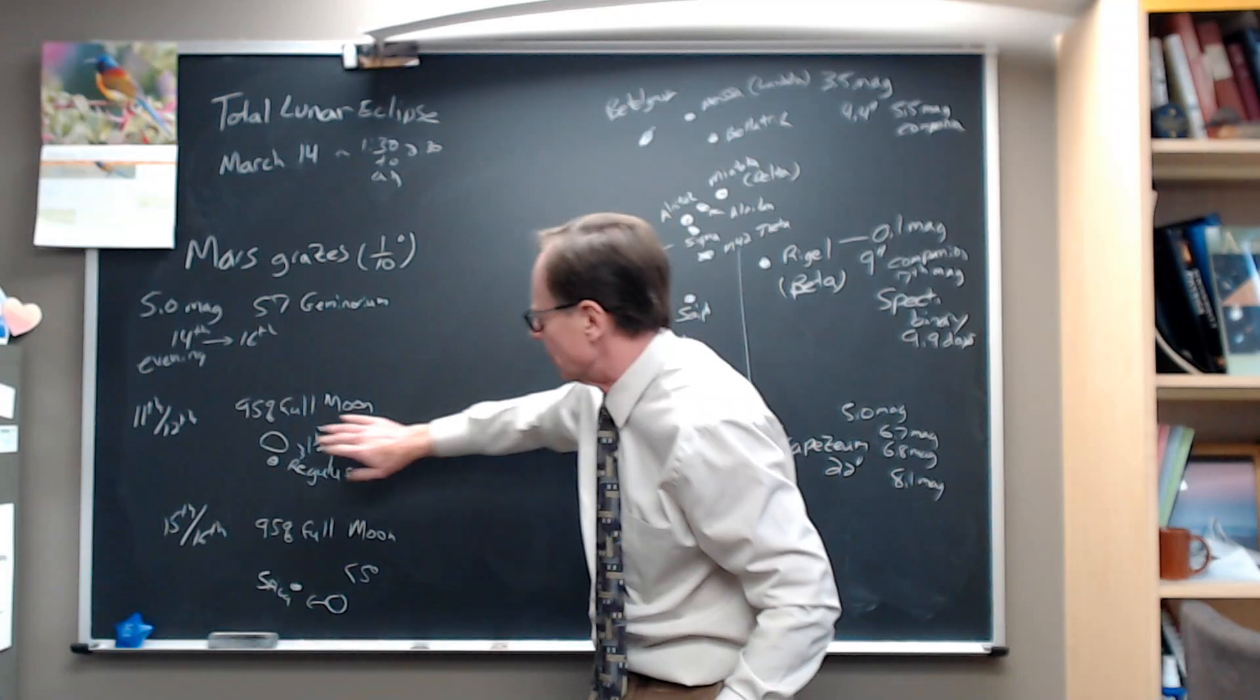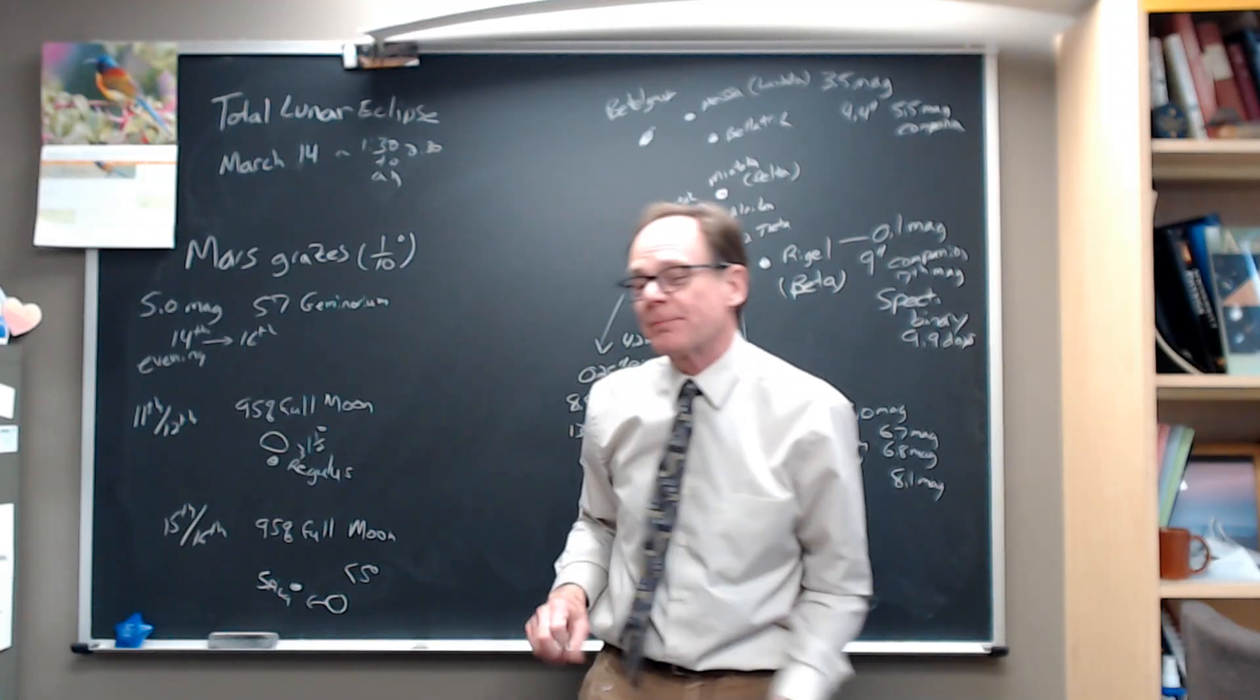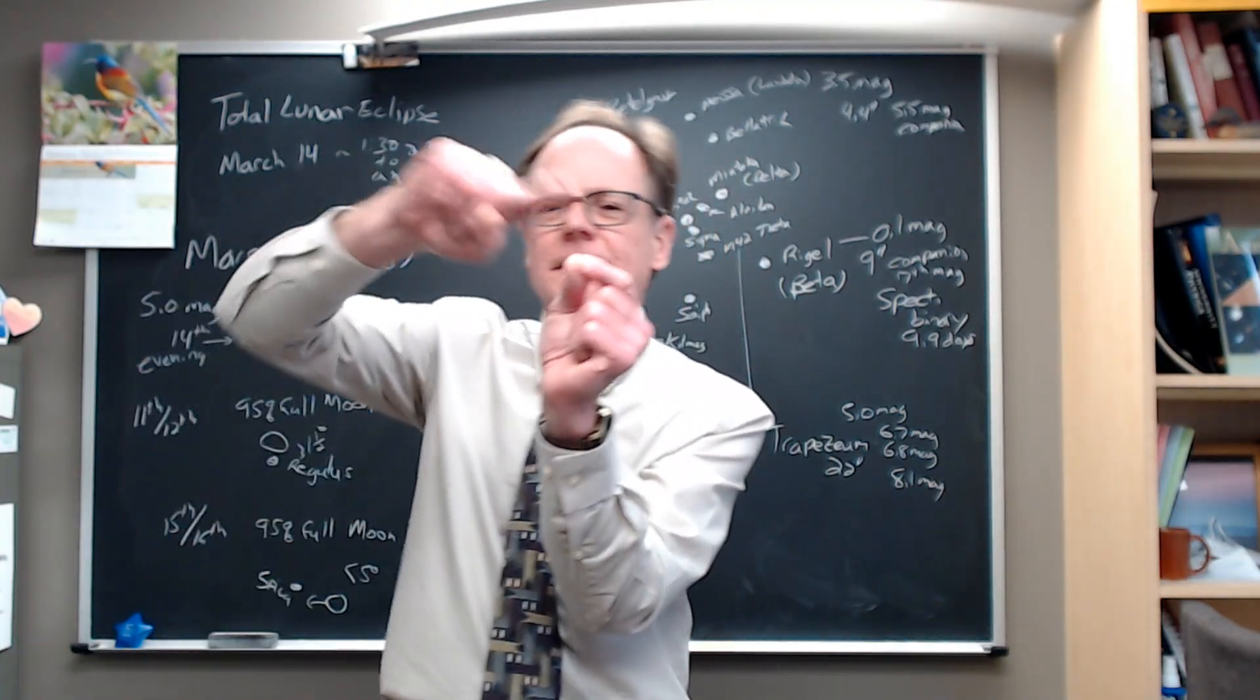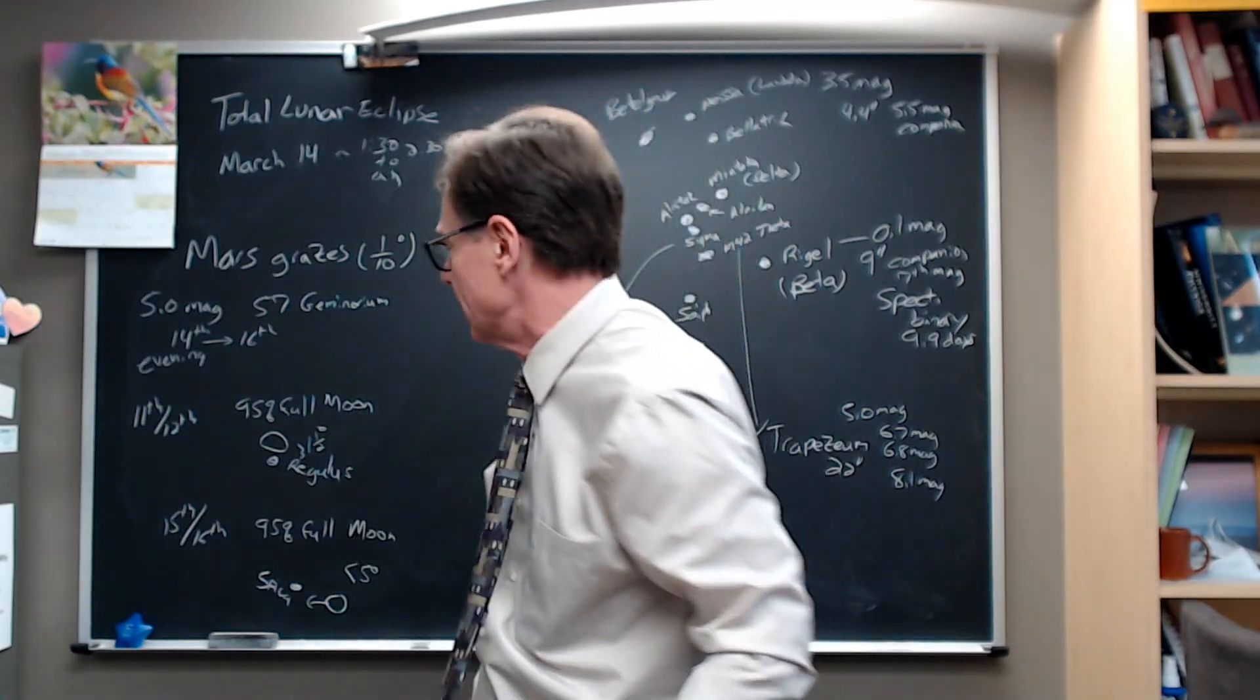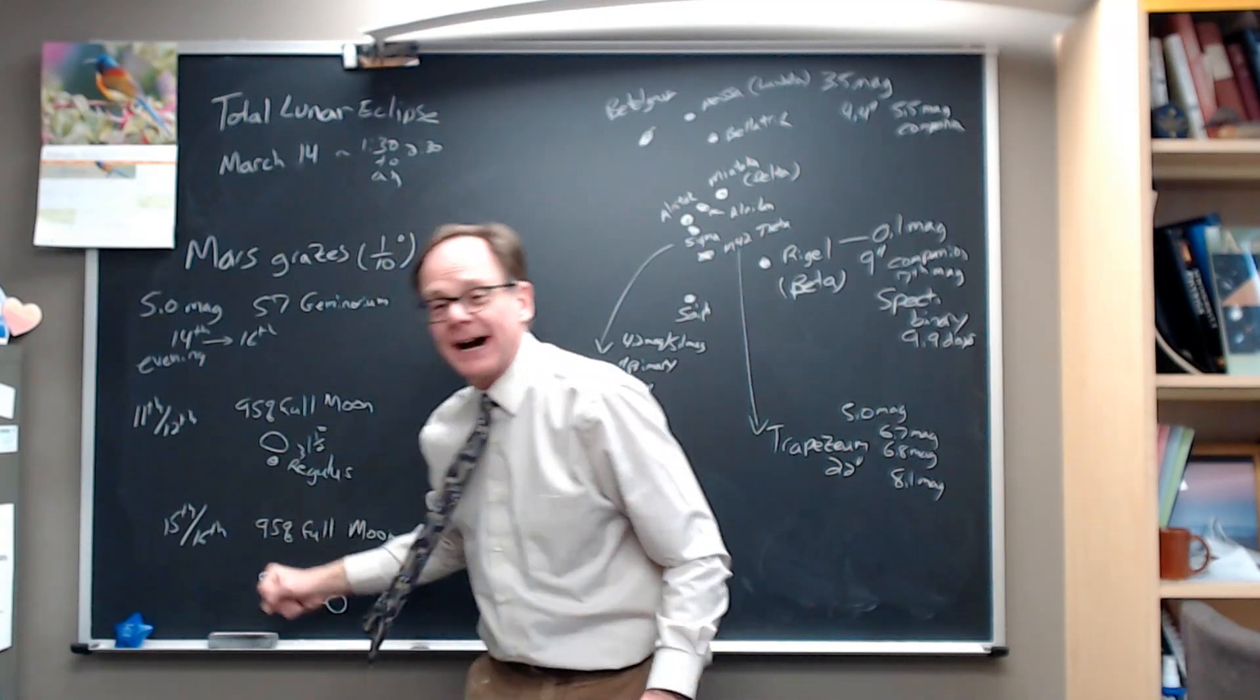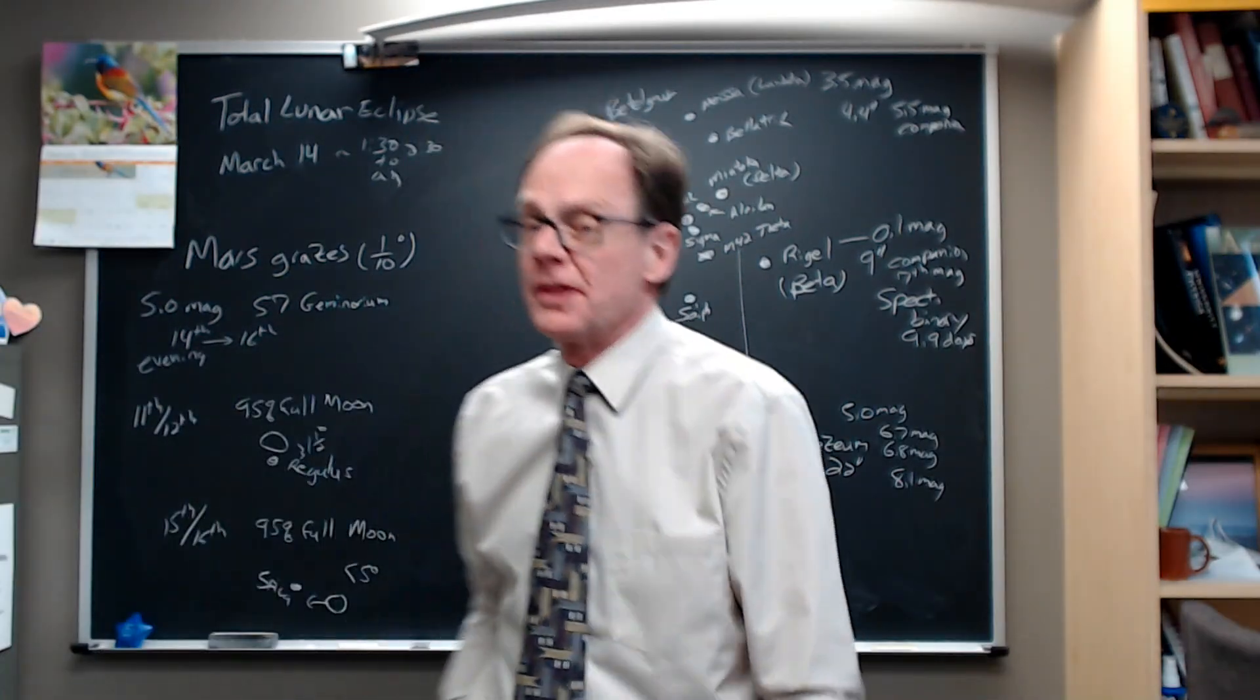The bad news is, we've got a lot of moon. On the 11th into the 12th, so the evening of the 11th into the morning of the 12th, a 95% full moon passes within about one and a half degrees of Regulus, the bright star in the base of the backward question mark, the sickle shape of Leo. That 95% full moon is headed toward a full moon on the 14th. Coming out of the full moon, it's still 95% full on the evening of the 15th into the 16th. You can see just how full the moon is all week.